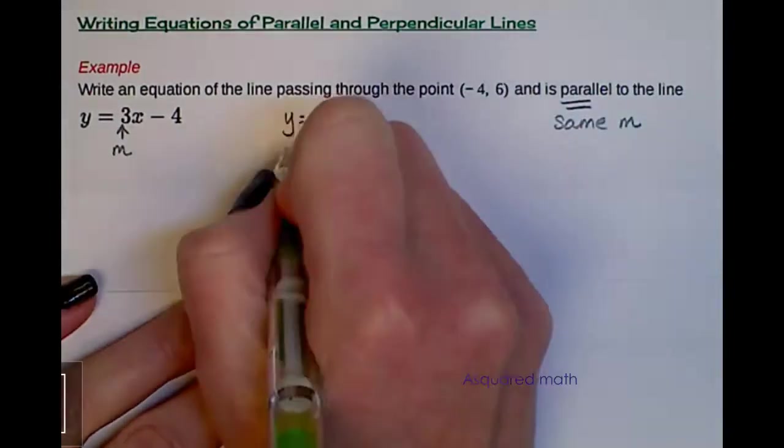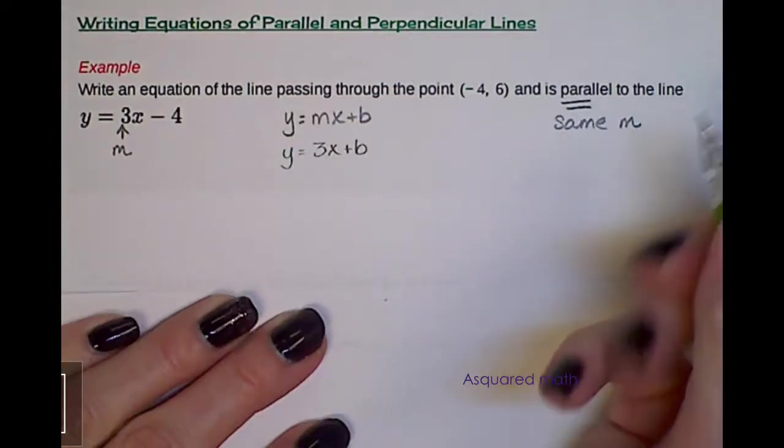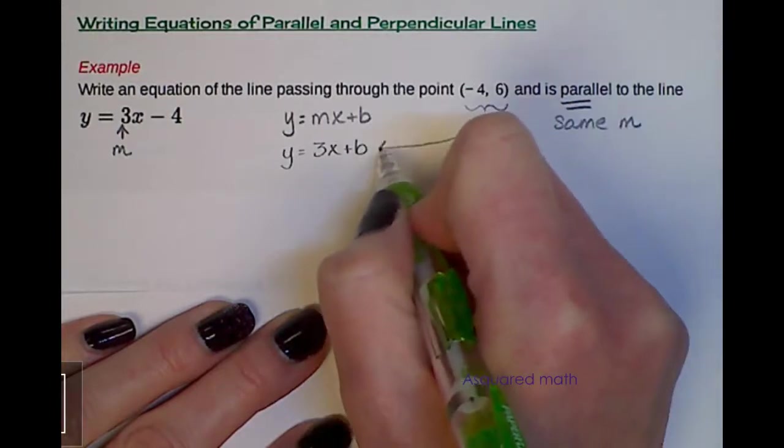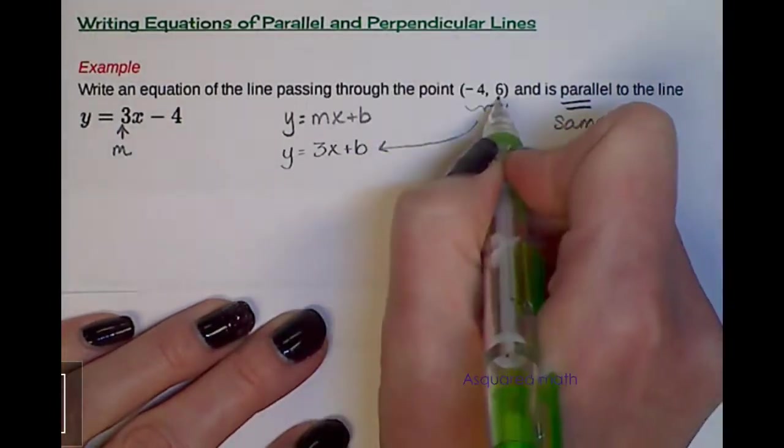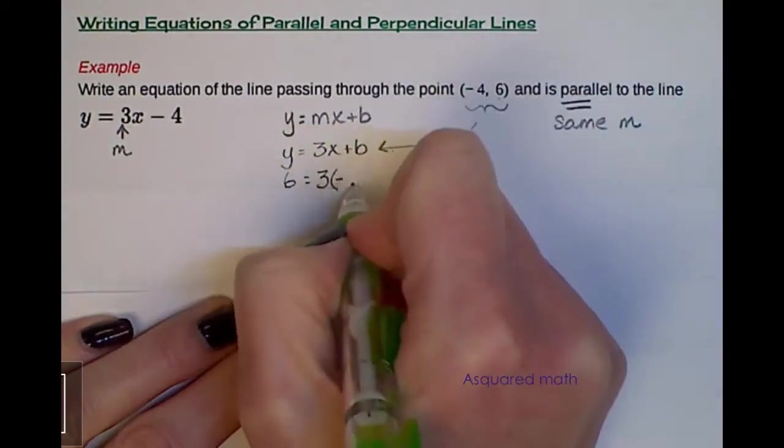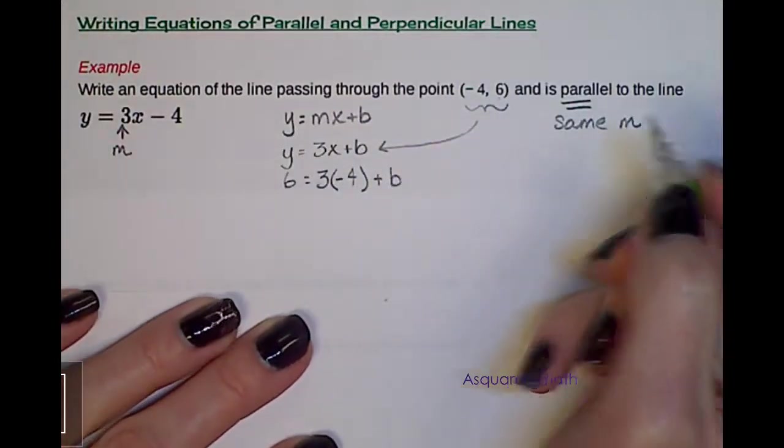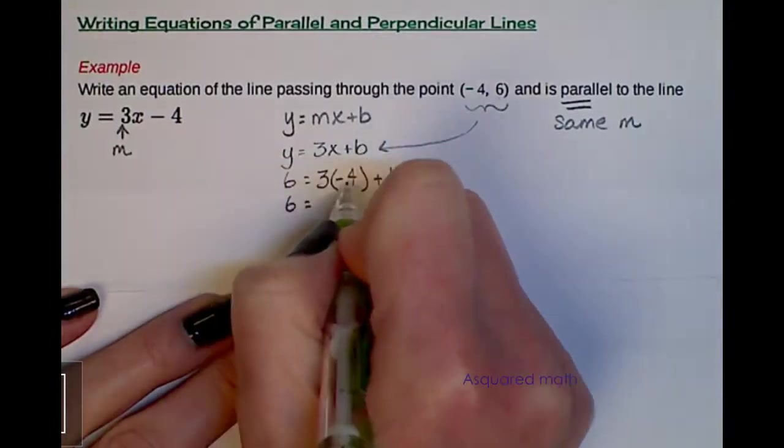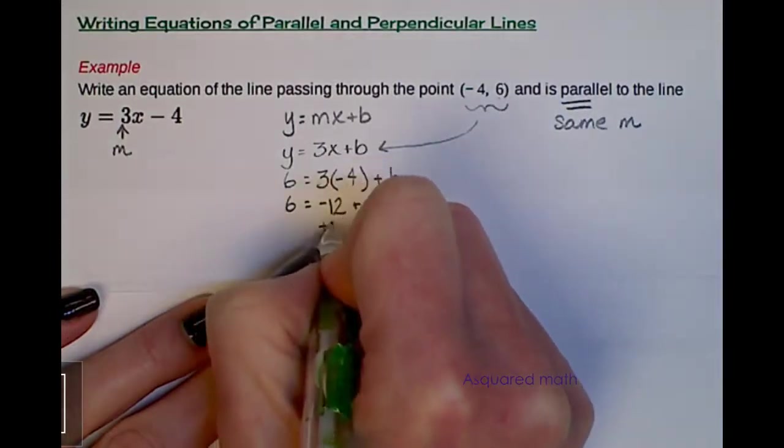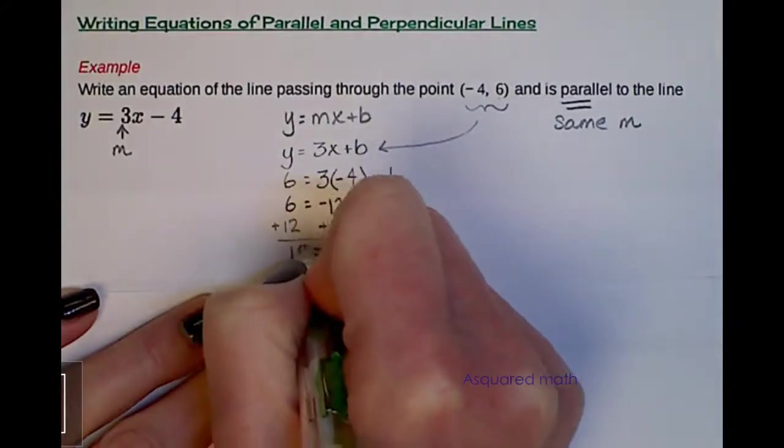So we're looking for parallels, so we have to use the same slope. And we need to find a b value or a y intercept that goes along with this point. So what I'm going to do is I'll first plug in my slope, so I have y equals 3x plus b. And then from there I'm going to plug in these x and y values into my x and y in this equation here. So my y value is 6, so I have 6 equals 3 times my x value is negative 4 plus b. b is what we're solving for. So we have 6 equals 3 times negative 4 is negative 12 plus b. We need to get b by itself, so let's add 12 to both sides.